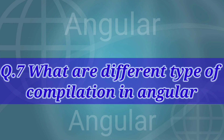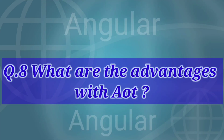The next question is: what are the different types of compilation in Angular? Angular offers two ways to compile your code: Just-in-Time (JIT) and Ahead-of-Time (AOT). Just-in-Time is a type of compilation that compiles your app in the browser at runtime, and it is the default when you run ng build or ng serve. Ahead-of-Time is a type of compilation that compiles your app at build time; to use it, include the AOT option with ng build or ng serve.